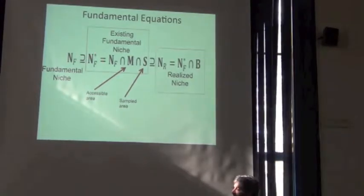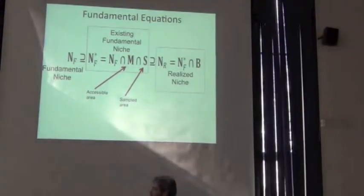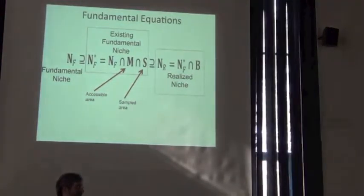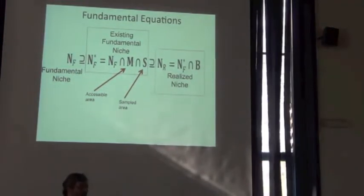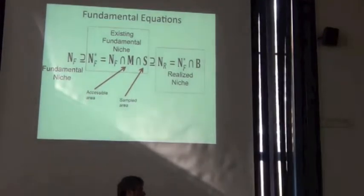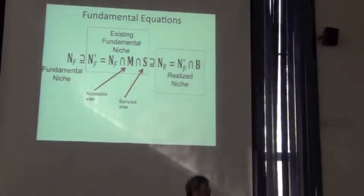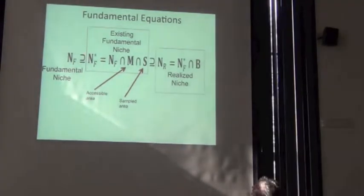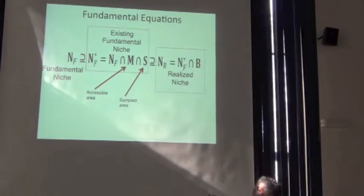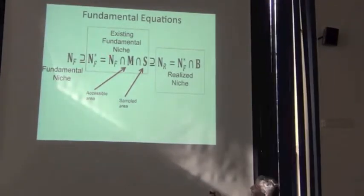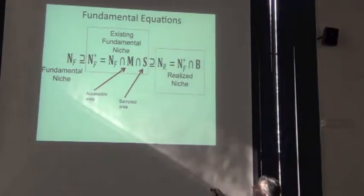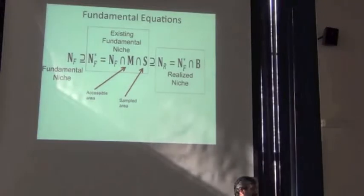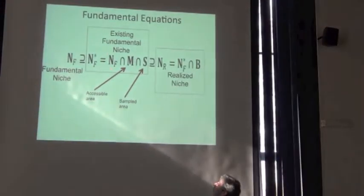But this is what you can observe. This is what we're able to estimate, unless we're really, really careful and really, really lucky. That existing fundamental niche is what we're getting out of these models, because it's the fundamental niche relative to the environments available to the species. And so what you can see is that if this is the only thing you can observe, and if this is constant, then all of that variation is coming out of either M or S, and not out of the fundamental niche.